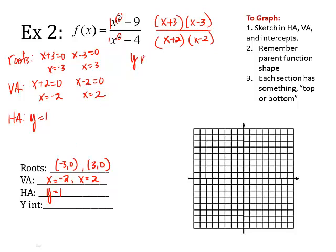With y-intercept, put in zero for x's. So I have zero minus nine over zero minus four, which gives me a positive nine over four. So zero and nine over four.